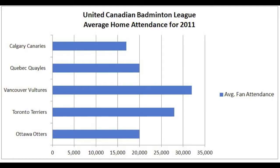For example, let's look at this bar graph for the average home attendance of the United Canadian Badminton League. We can quickly and easily look at this bar graph to see that the Vancouver Vultures have the most fans attending each of their games, and that the Calgary Canaries have the least.